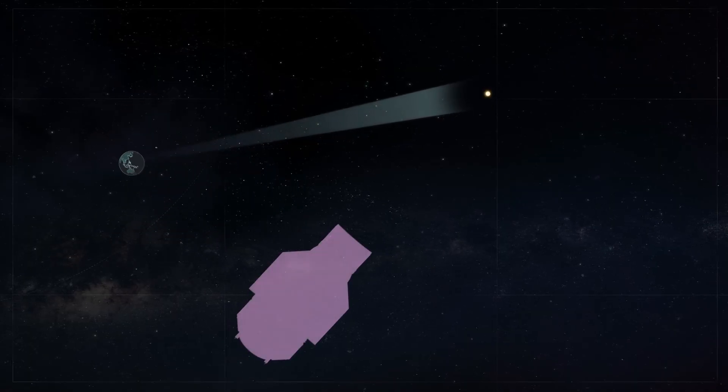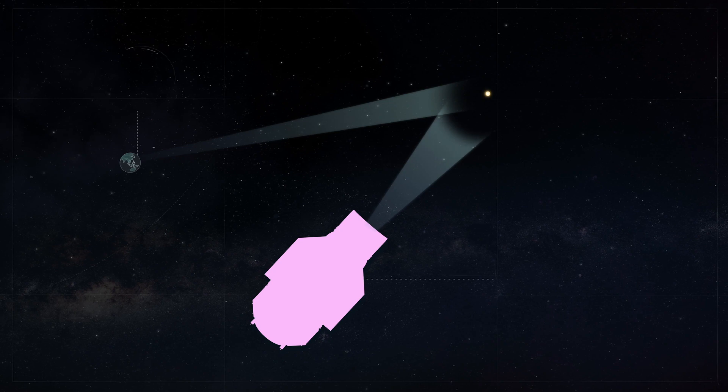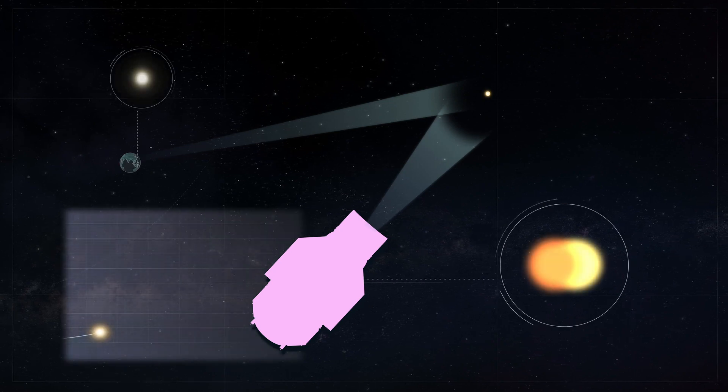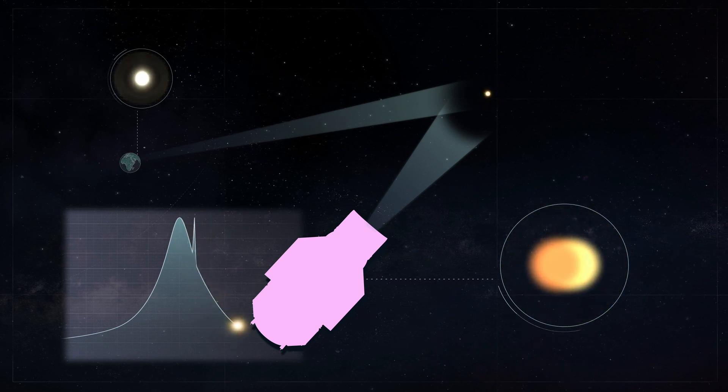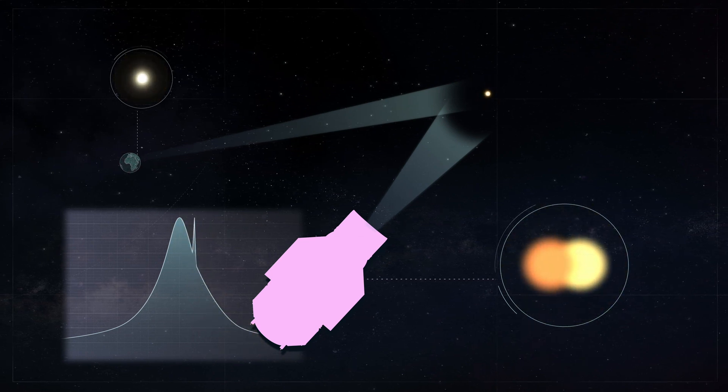Microlensing looks for a tiny flash of light from a background star as a planet moves between us and the background star. This flash is a signal that betrays the existence of a relatively small, dark world.